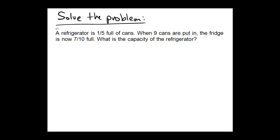Let's see if we can figure this out. So at the beginning of time, the refrigerator is one-fifth full of cans. It has some kind of capacity. Let's let x equal capacity of the fridge, because that's the unknown.